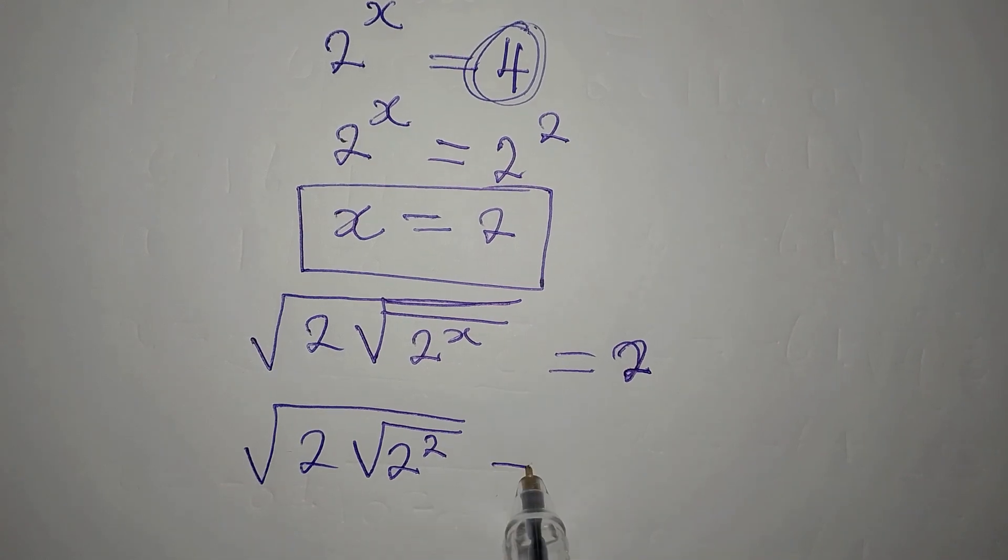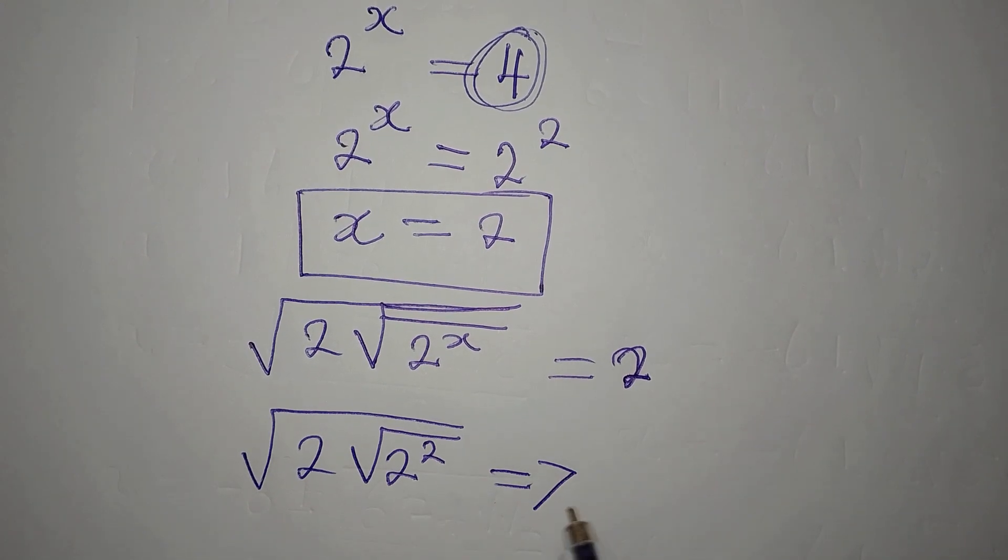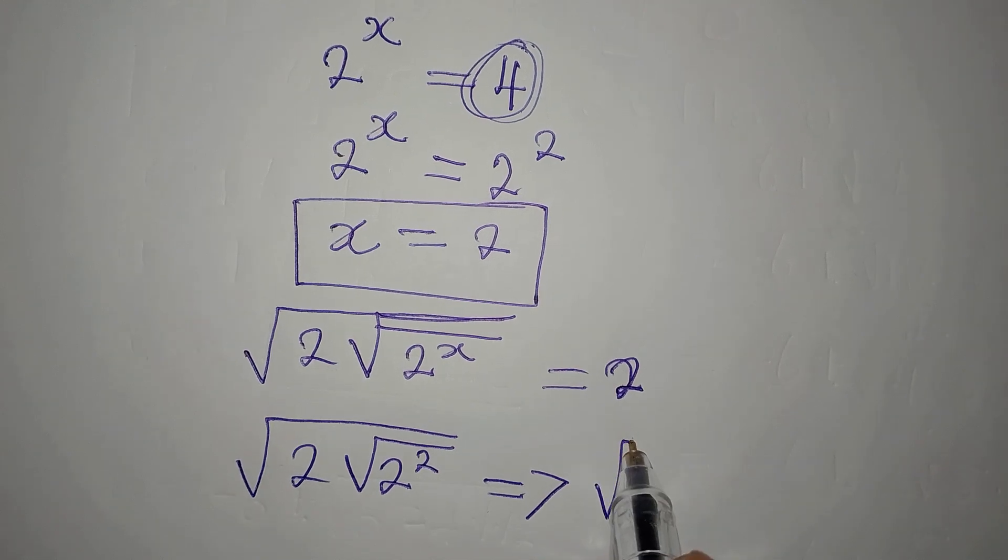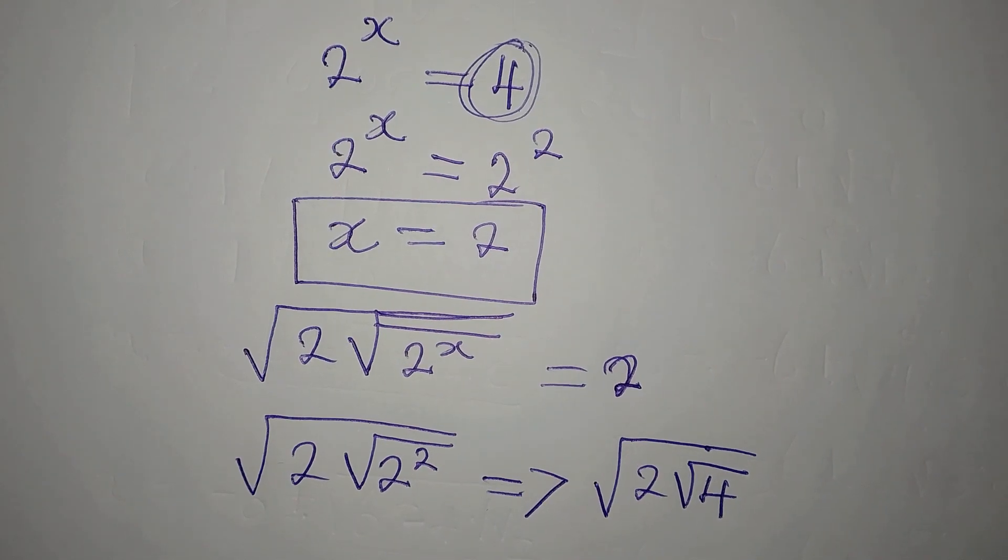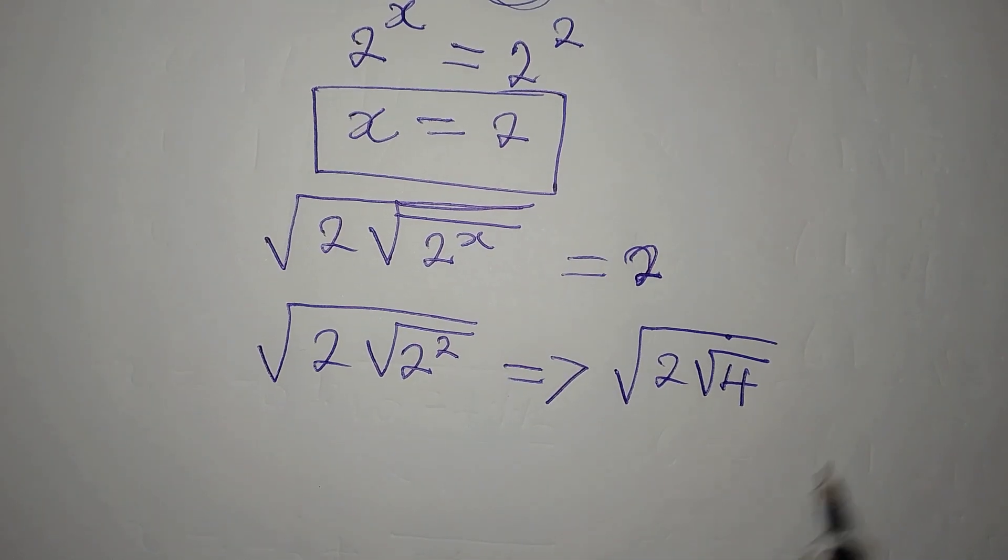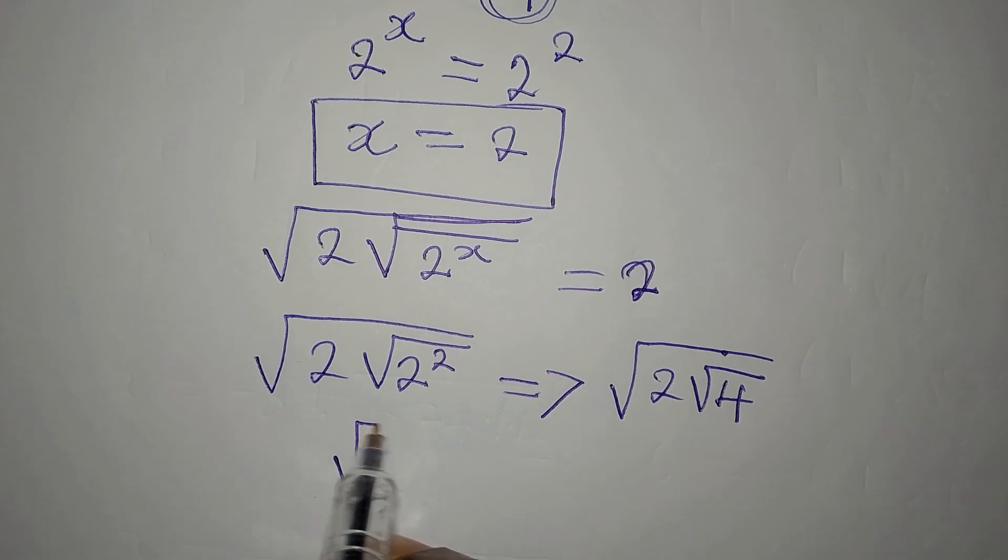Now what will this give us? This will give us the square root of 2 to the square root of 4. And square root of 4 is 2, so that means that we're having the square root of 2 times 2.